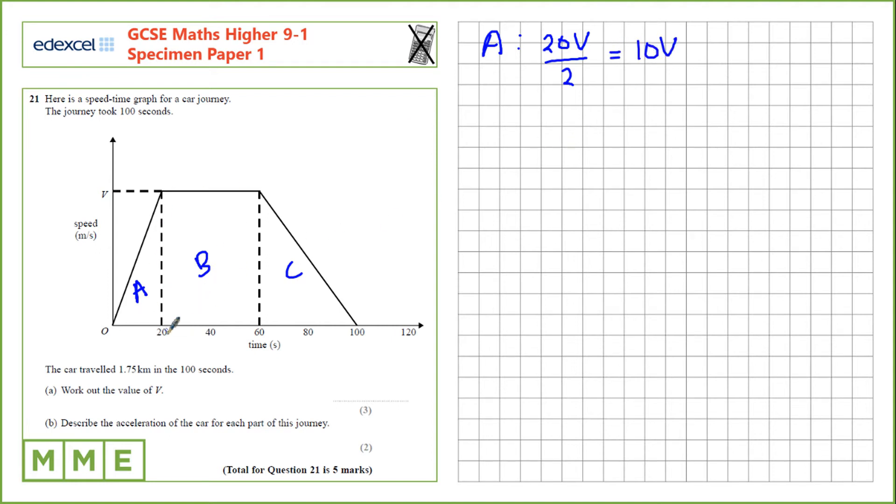For area B, the time taken from here to here is 40 seconds multiplied by V, which is 40V. And for C, this is 40 seconds again multiplied by V and divided by 2 since it's a triangle, 20V.